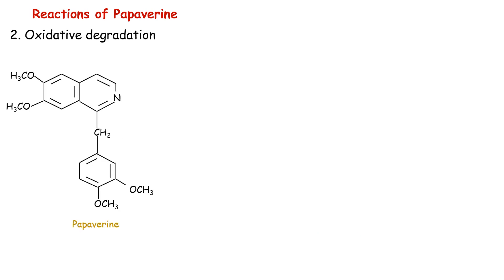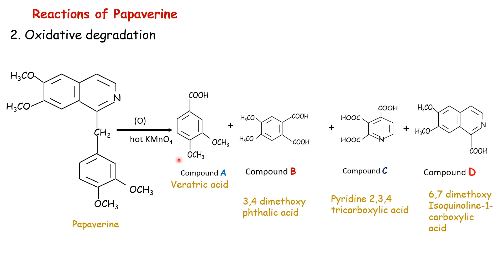Oxidative degradation reaction: papaverine when treated with hot KMnO4 gives four products — compound A (veratric acid, 3,4-dimethoxybenzoic acid), compound B (3,4-dimethoxyphthalic acid), compound C (pyridine-2,3,4-tricarboxylic acid), and compound D (6,7-dimethoxyisoquinoline-1-carboxylic acid). These are the four products of the oxidative degradation reaction of papaverine.